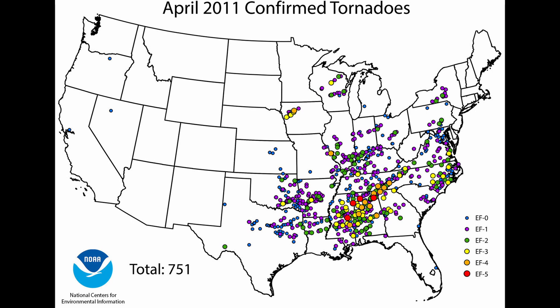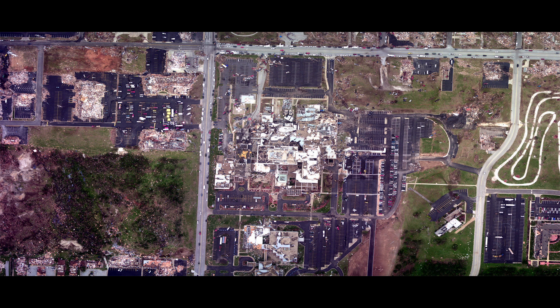The 2011 Super Outbreak caused unprecedented damage across the affected region. It resulted in 324 fatalities and over 3,000 injuries, making it the deadliest tornado outbreak in U.S. history since 1936. In Alabama alone, 238 people were killed, with other fatalities reported in Mississippi, Tennessee, Georgia, and Virginia. The economic impact was immense, with damage estimates exceeding $10 billion and entire communities needing to be rebuilt. Homes, schools, hospitals, and businesses were destroyed, and infrastructure such as power lines and highways was severely damaged. In some areas, recovery efforts took years, and for many families the psychological toll was profound.